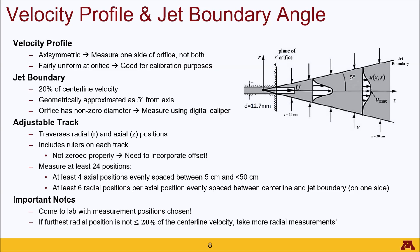The jet boundary has a geometric approximation: it is 5 degrees from the axis, or 10 degrees between one jet boundary and the other side. Something that many people forget is that the orifice has a defined diameter, so you need to incorporate an offset in your geometric approximation equal to the orifice radius. A digital caliper will be provided to measure that orifice diameter.